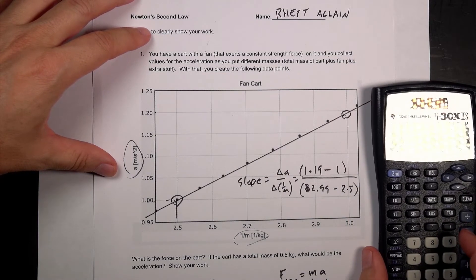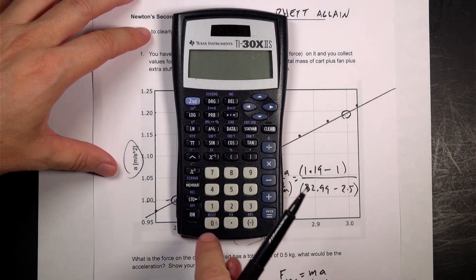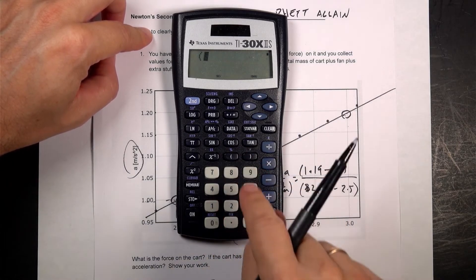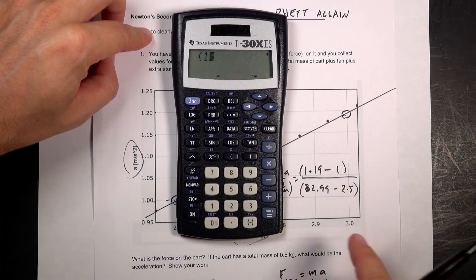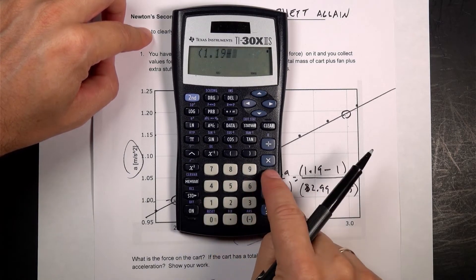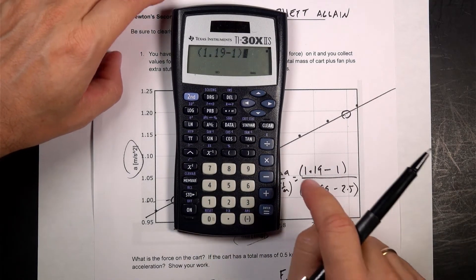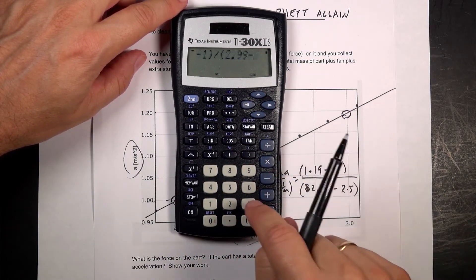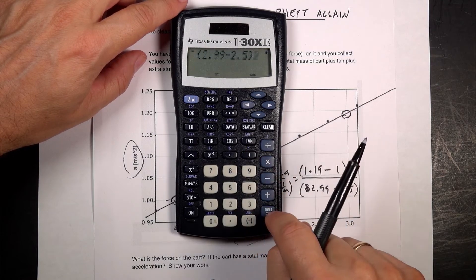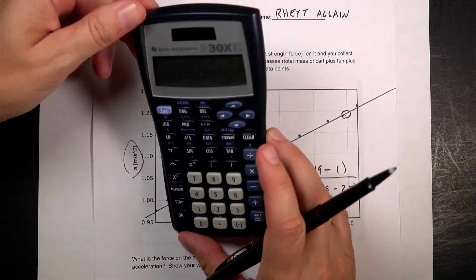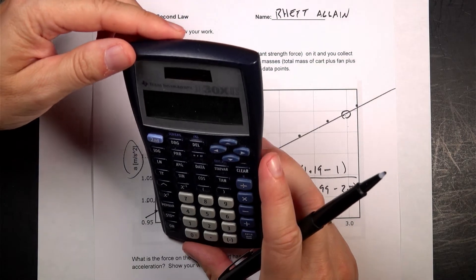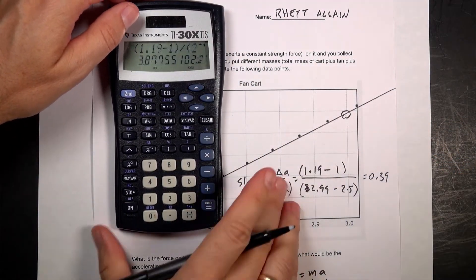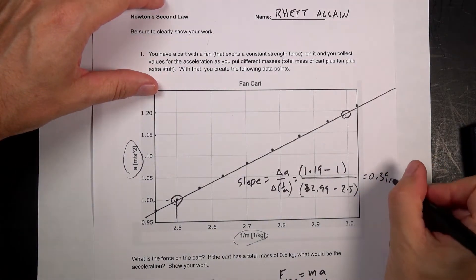And that's going to be my slope, and that slope is my net force. So let's calculate that slope. I'm going to put the calculator where you can see it. So I'm going to put this as parentheses 1.19 minus 1, divided by parentheses 2.99 minus 2.5. And I get a force of 0.39.